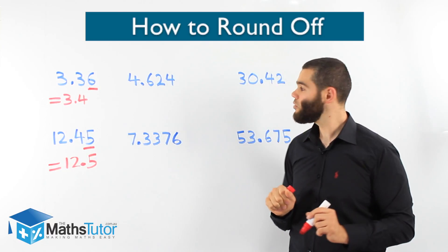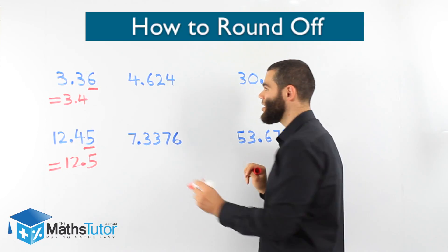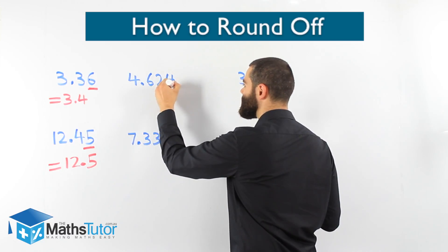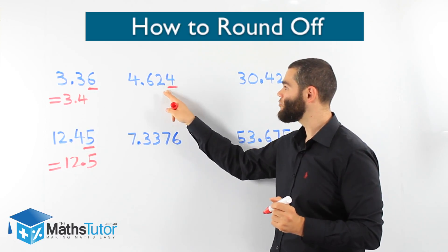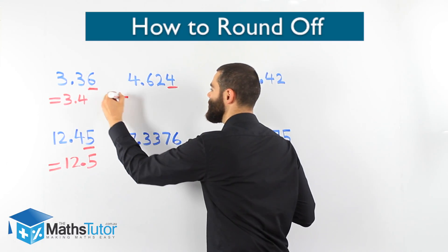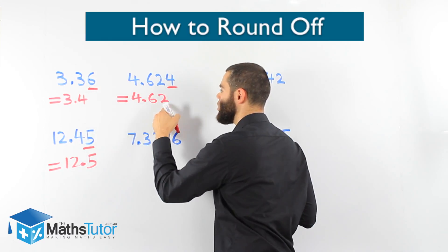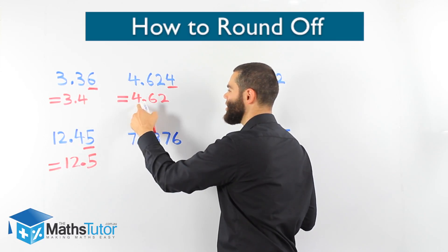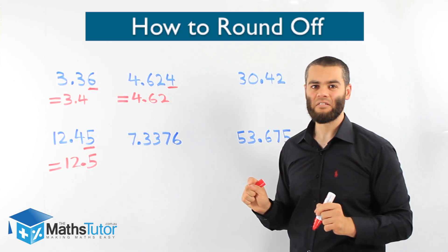Here we're going to be asked to round off to two decimal places. These are the two decimal places, so we look to the one on the right. Are you 5 or more? In this case, 4.624 — the 4 is not 5 or more, it's actually less. So we can't round up, we have to round down. The answer is 4.62 — two decimal places. The 4 couldn't push up, so we just round down. We've rounded down because the 4 is less than 5.